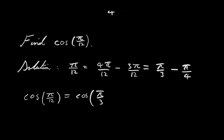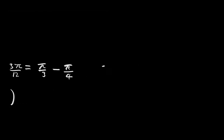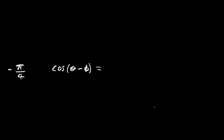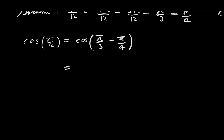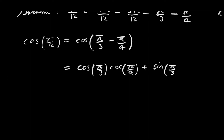So we have the cosine of π over 3 minus π over 4. Now recall the difference formula for cosine: the cosine of the difference of two angles θ minus φ is equal to the cosine of θ times the cosine of φ plus the sine of θ times the sine of φ. We apply the difference formula for cosine taking θ to be π over 3 and φ to be π over 4. This gives us the cosine of π over 3 times the cosine of π over 4 plus the sine of π over 3 times the sine of π over 4.